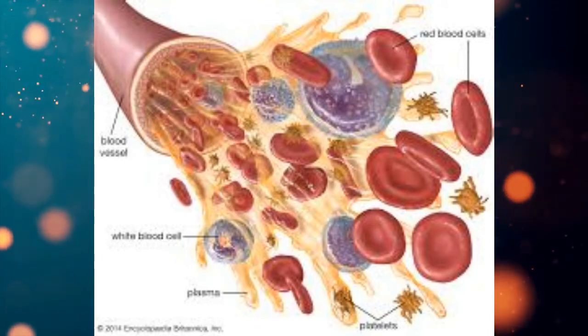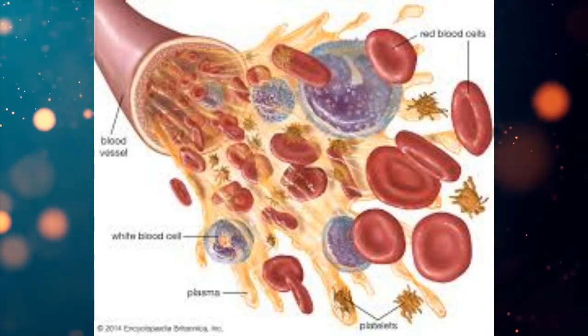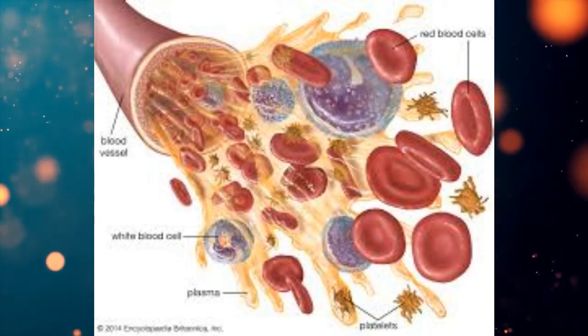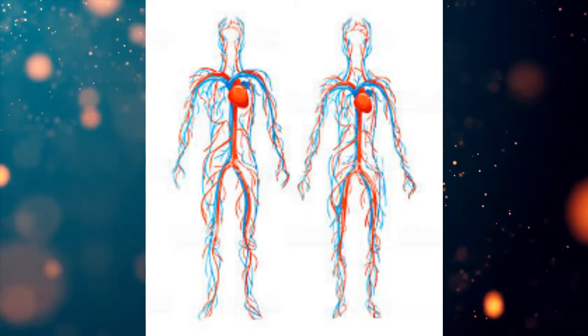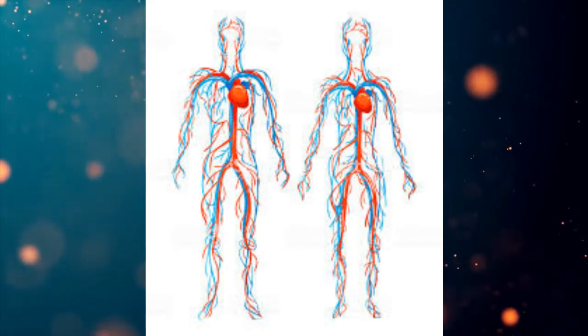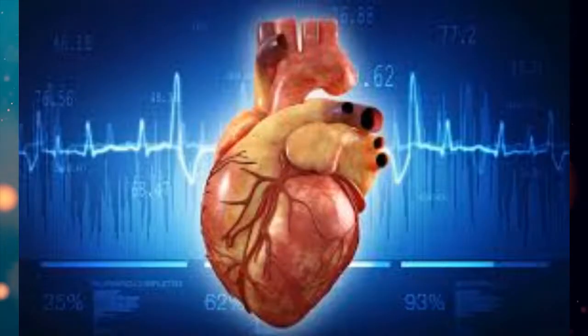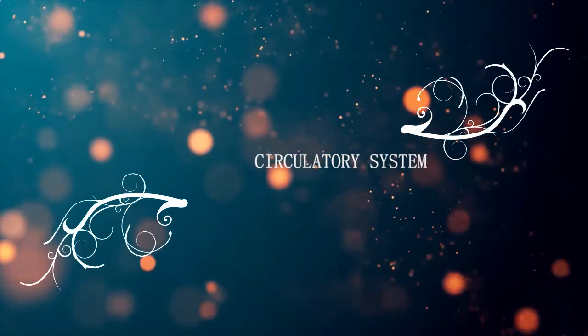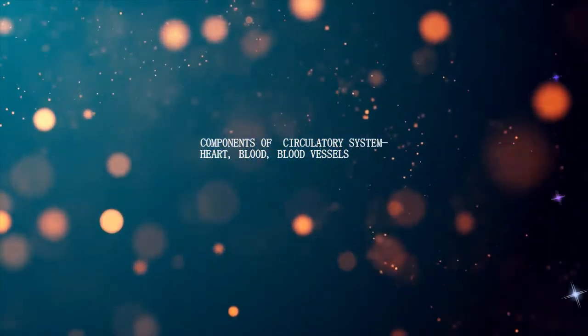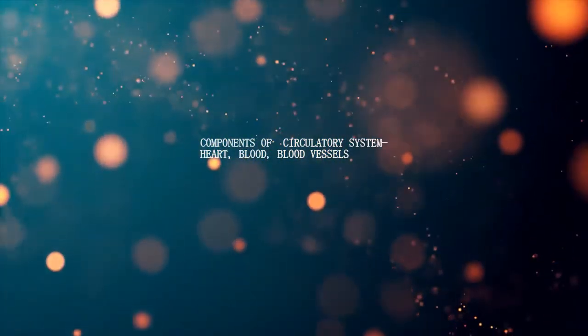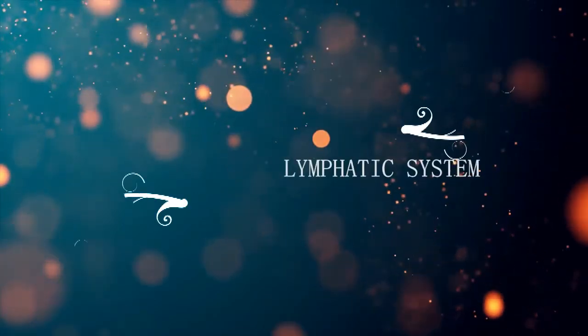When blood is transported, it moves through a network of tubular structures called blood vessels. Blood needs a pumping organ to move through these vessels, and that pumping organ is called the heart. Here we are going to discuss the circulatory system in human beings.